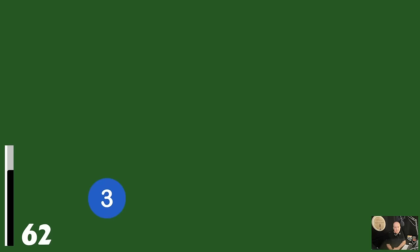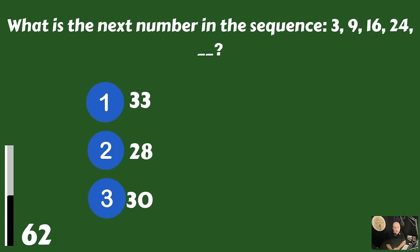What is the next number in the sequence 3, 9, 16, 24, blank? Is it 33, 28, or 30? That would be 33.